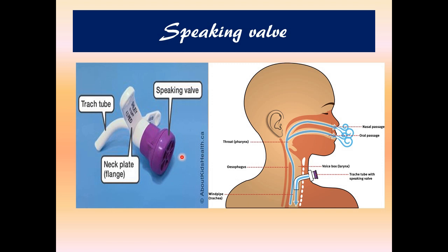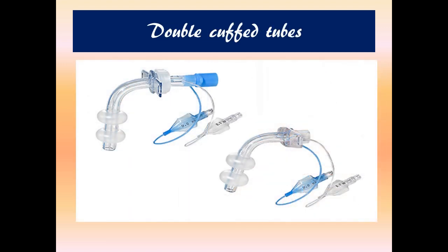The speaking valve is a slightly more expensive type of tube. During inspiration, the valve vent is open, but during expiration it closes, so trapped air is pushed up to the larynx — the voice box — allowing the patient to produce sounds. The speaking valve assists the patient in improving the quality of speech.